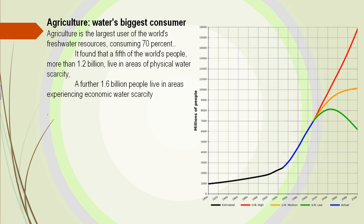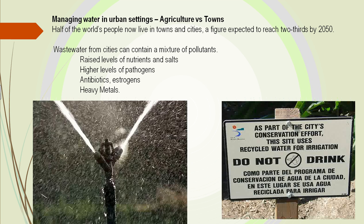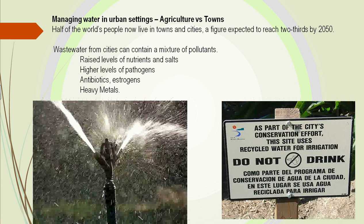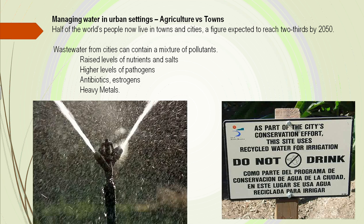Agriculture is water's biggest consumer — it takes 70% of the freshwater. A large amount of people, 1.2 billion, are living in areas where there's not much water. As our population is growing, our water amount is not growing with it. What do we do in urban areas? We all like to have our water sprinklers on, yet we're losing water.